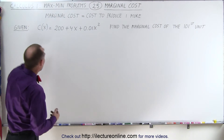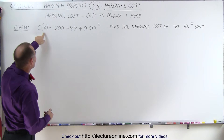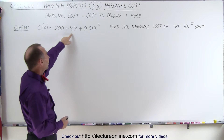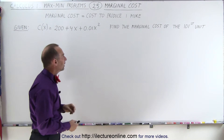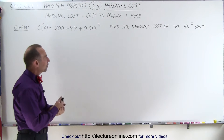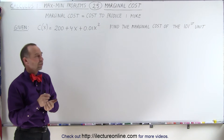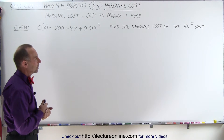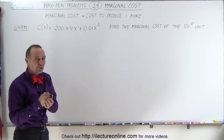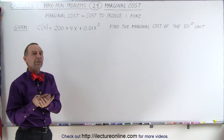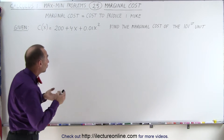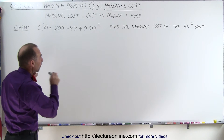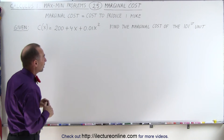If we're given the cost equation c(x) equal to 200 plus 4x plus 0.01x squared, we're supposed to find the marginal cost of the 101st unit produced. We're going to do it using some algebra techniques, and then we're going to use the first derivative technique and see how they relate to one another.